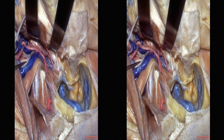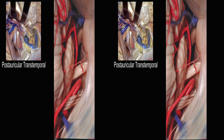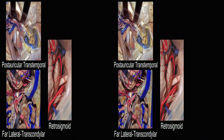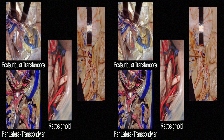Roten has categorized approaches to the jugular foramen into three groups. A lateral group directed through the mastoid bone — the postauricular transtemporal approach. A posterior group directed through the posterior fossa, including a retrosigmoid or a more extensive far lateral or transcondylar variant approach. And an anterior group directed through the tympanic bone — the preauricular subtemporal infratemporal fossa approach or variations of that. In each of these approaches, a neck dissection can be included as needed.